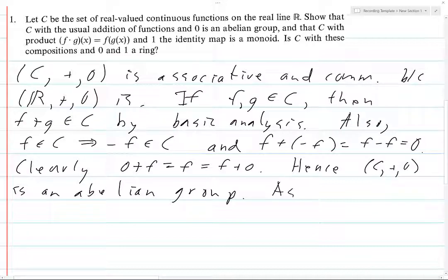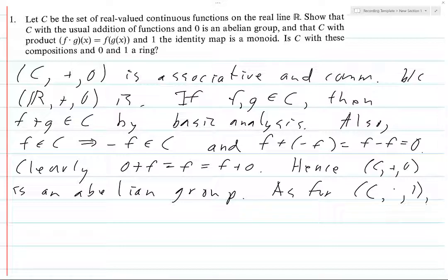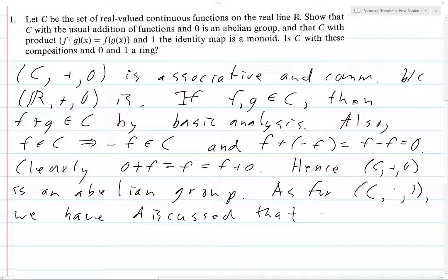As for the other operation — he calls it dot here, though the circle notation is typically used for composition — this is function composition. We have discussed that dot is associative; you can go back and read section 0.3 where he discusses basic function theory.